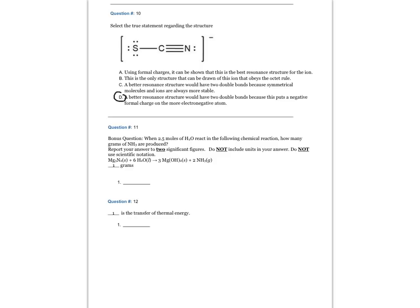Question number 11: When 2.5 moles of H2O react in the following chemical reaction, how many grams of NH3 are produced? Report your answer to two significant figures. Do not include units in your answer. Do not use scientific notation. The answer is 14 grams.